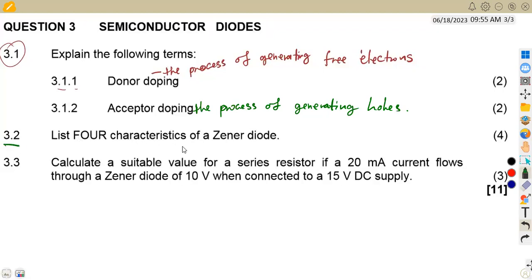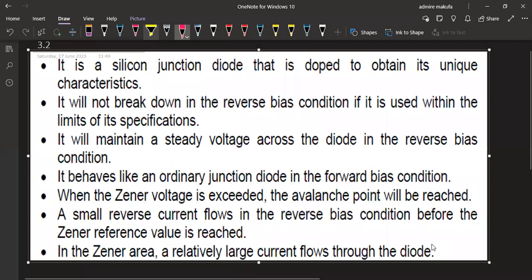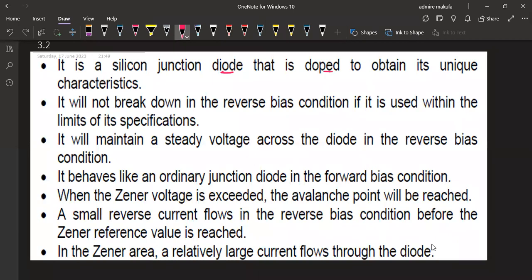3.2, list four characteristics of a Zener diode in this case. What is it that we consider when we are talking about a Zener diode? So a Zener diode, the first thing that we can talk about, it is a silicon junction diode that is doped to obtain a unique characteristic.